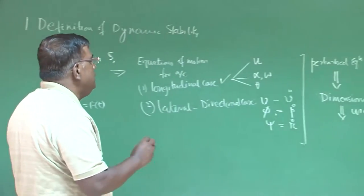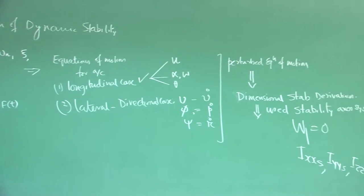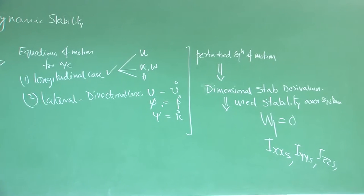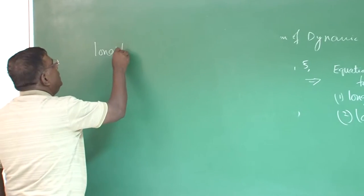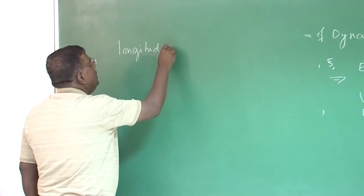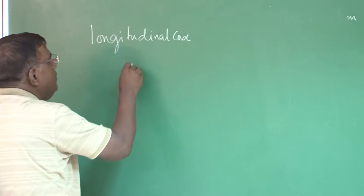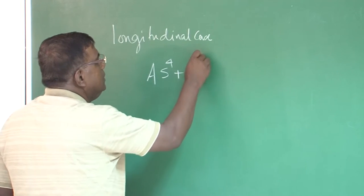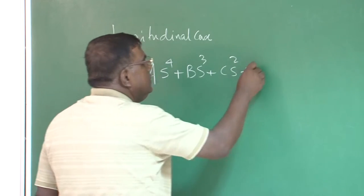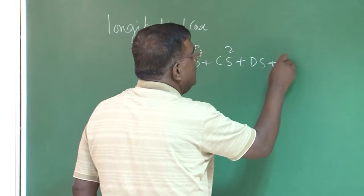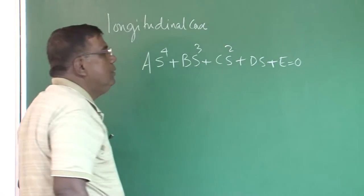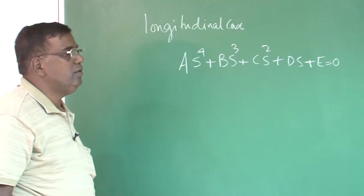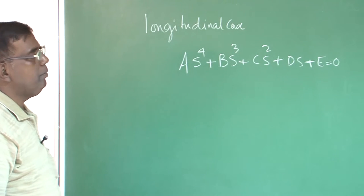Once we have done this, then we found that if I take a longitudinal case, we get equation of the form A s^4 plus B s^3 plus C s^2 plus D s plus E equal to 0. A, B, C, D, E, they have the expressions based on the stability derivatives and inertia properties.